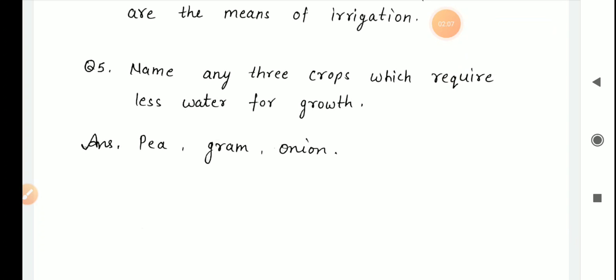Name any three crops which require less water for growth. Pea, gram, onion.